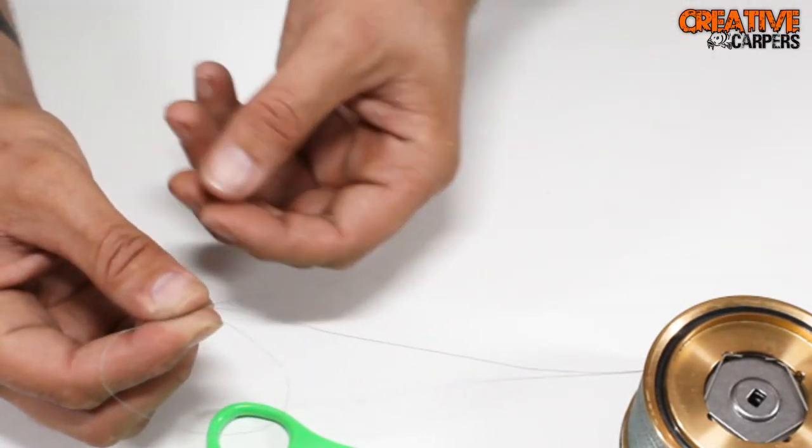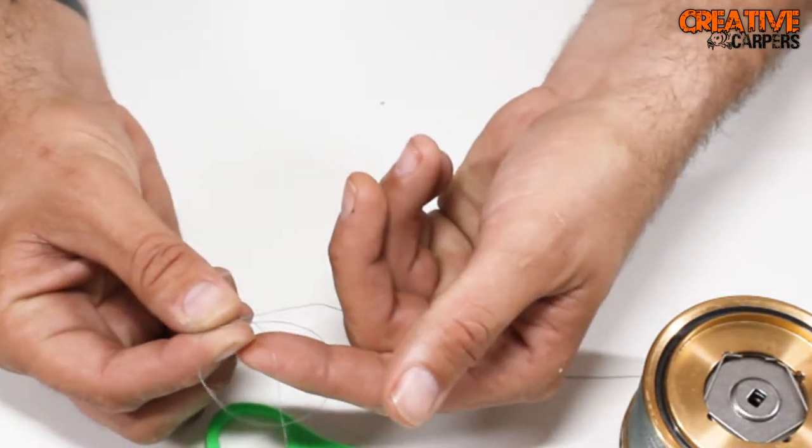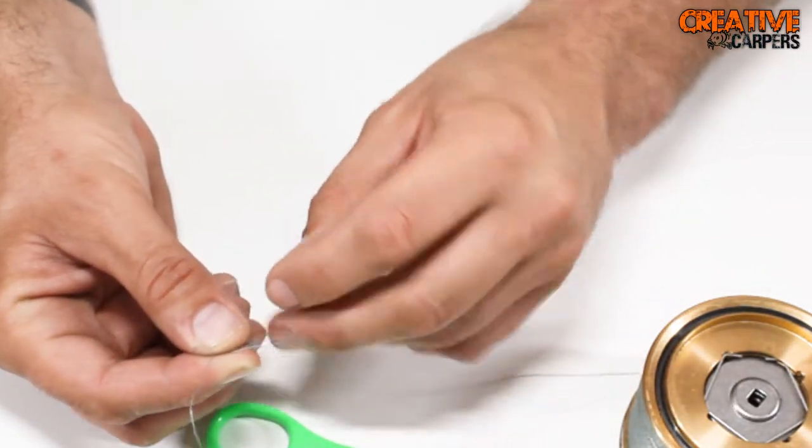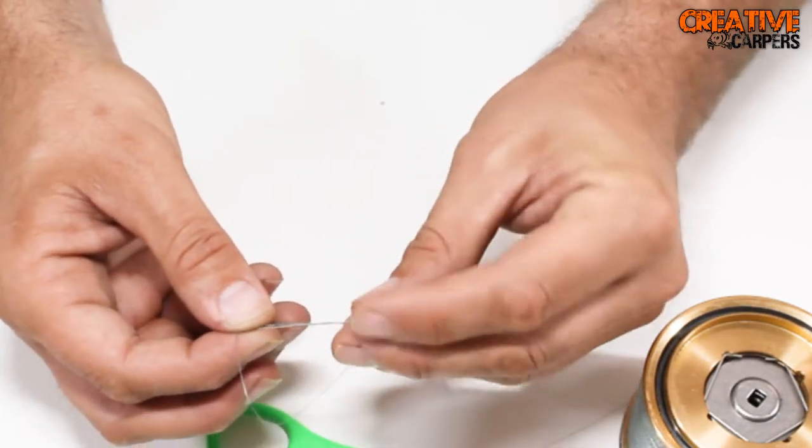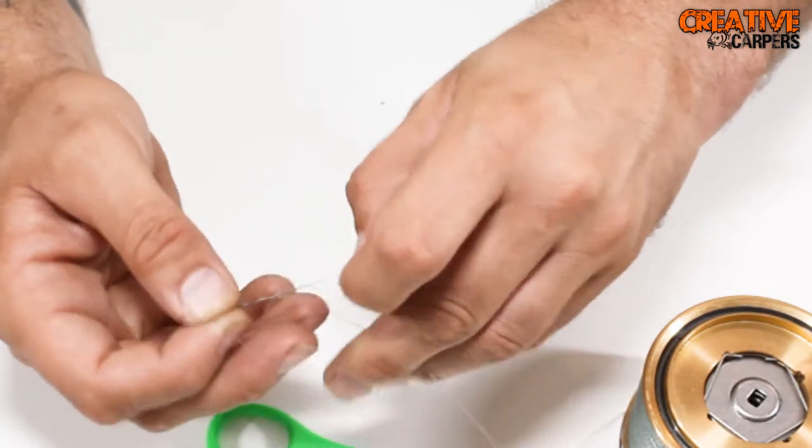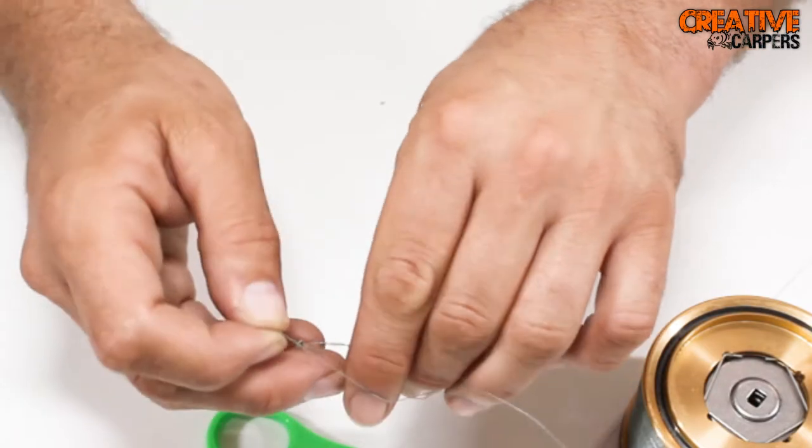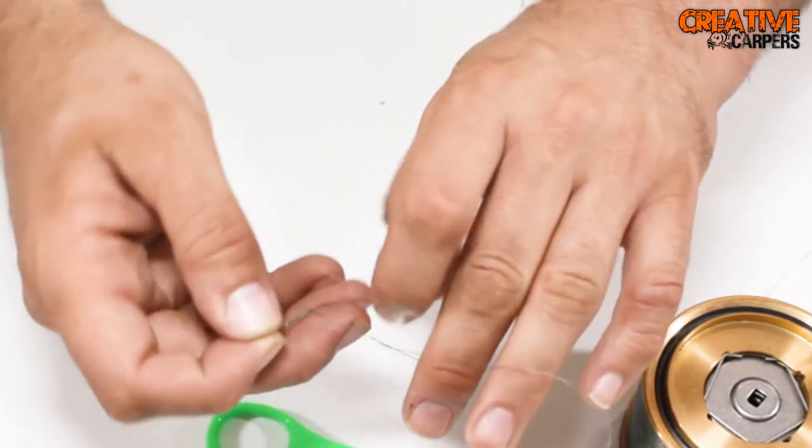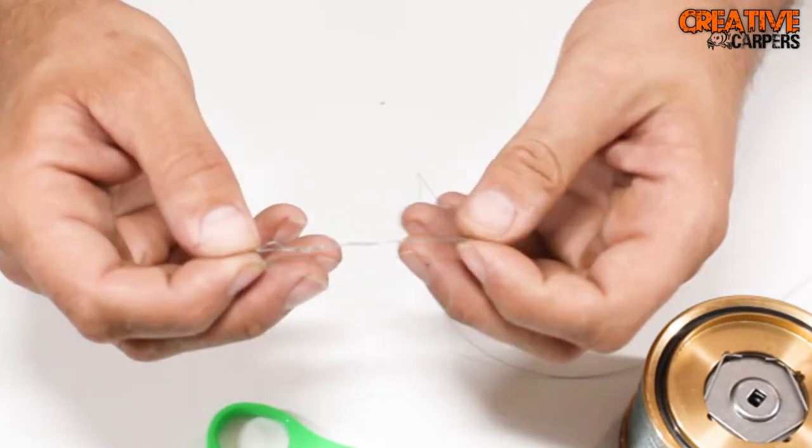Begin to pull the tag end through the loop 5 times—that's 2, 3, 4, 5. Actually, I'm going to go around 6 times, but you can do this as many times as you like.